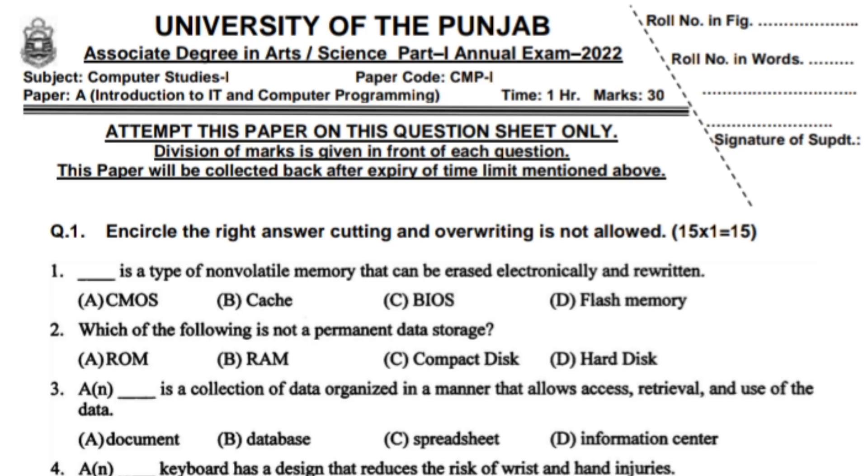Which of the following is not a permanent data storage? RAM. A database is a collection of data organized in a manner that allows access, retrieval, and use of the data.